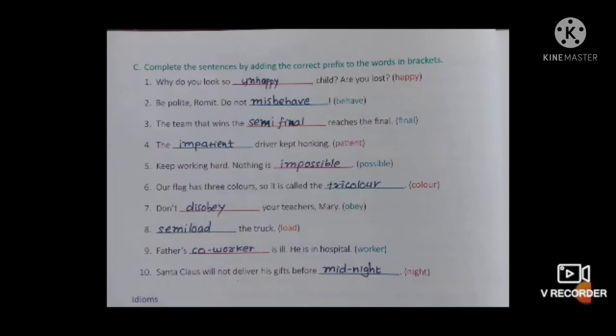Fourth one: 'The _____ (patient) driver kept honking.' We add 'im' before 'patient' - impatient. Im means 'not,' as we have studied. Fifth one: 'Keep working hard, nothing is _____ (possible).' We put 'im' and make the word 'impossible.' Koi bhi cheez jo hai wo impossible nahin hai - sab cheez possible hai.